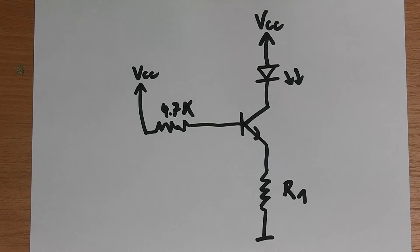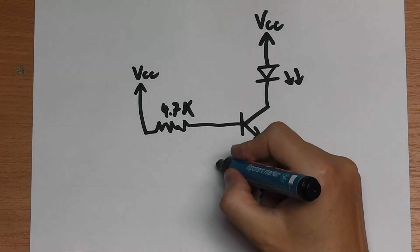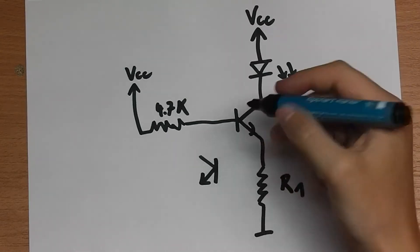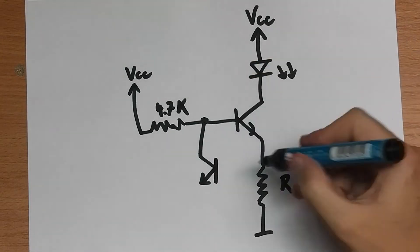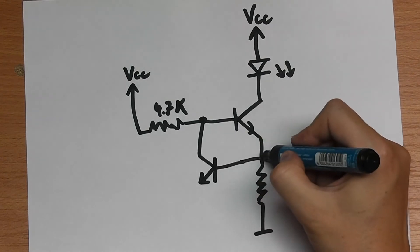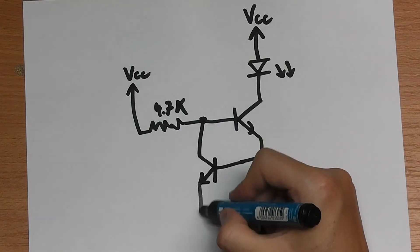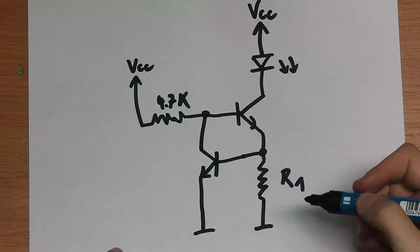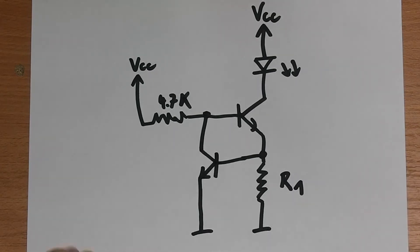So therefore we will augment the circuit by a second transistor and the second transistor will be in here, will be connected here, will be connected above R1 and this will also be connected to ground. And now our circuit is complete.